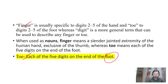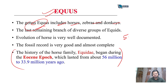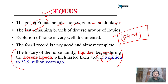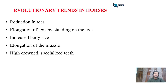The history of Equus evolution began around 50 million years ago - remember this fact. Fifty million years ago is somewhere around the Paleocene-Eocene boundary. Now what evolutionary changes happened in horses?